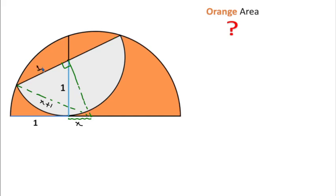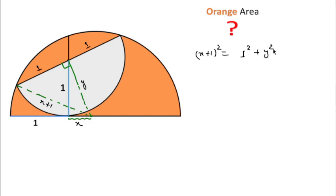This is a right angle triangle. The radius for the smaller semicircle is 1 unit. If I consider this side length as y units, then using the Pythagorean theorem — where x+1 is the hypotenuse — we can write: (x+1)² = 1² + y², which gives us (x+1)² - 1 = y².